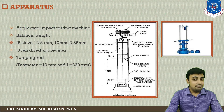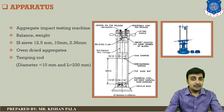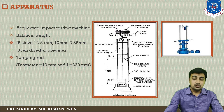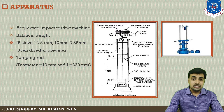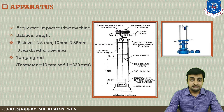We also require a tamping rod with diameter 10 mm and length 230 mm. You can see on your screen — this is the impact testing machine, and in this machine the arrangement is such that the hammer falls from a height of 380 plus or minus 5 mm.